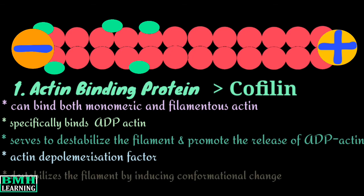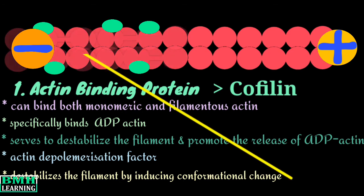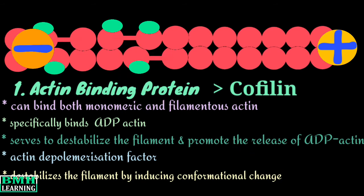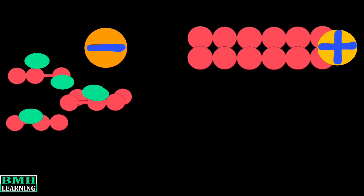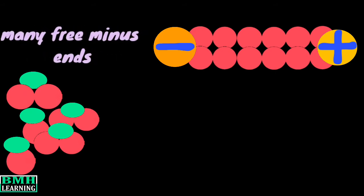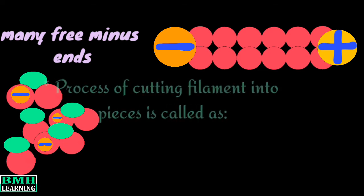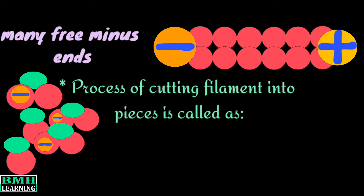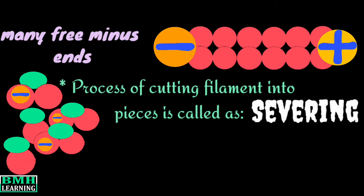How does cofilin do this? Cofilin destabilizes the filament by inducing a conformational change. This involves the production or stabilization of a twist within the filament, creating a strain that leads to the loss of filament integrity and breaks it into short pieces. This way, cofilin generates many more free minus ends and therefore accelerates disassembly at the minus end. This process of cutting the filament into pieces is called severing.